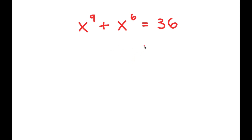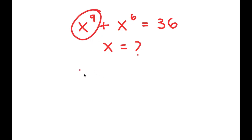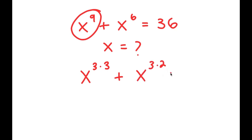In this problem, I have x to the power of 9 plus x to the power of 6 is equal to 36. I'm going to find the value of x. Now, x to the power of 9 I can rewrite as x to the power of 3 times 3, and x to the power of 6 I can rewrite as x to the power of 3 times 2. So I get x to the power of 3 times 3 plus x to the power of 3 times 2 is equal to 36.